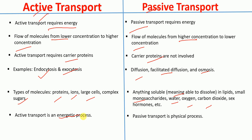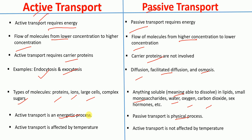Active transport is an energetic process — it requires energy — whereas passive transport is a physical process. Active transport is generally affected by temperature, whereas passive transport is not affected by temperature.